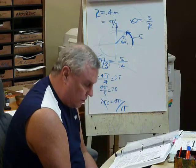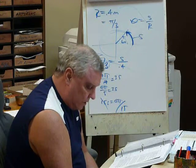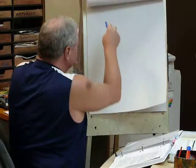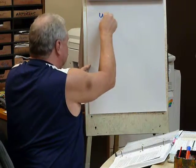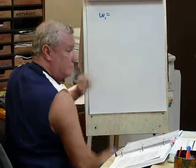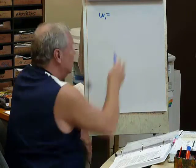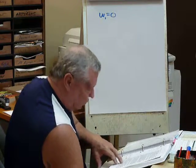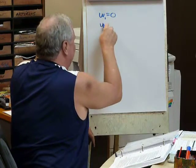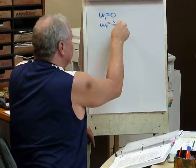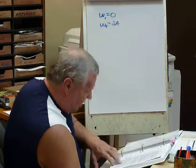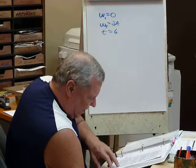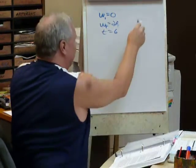Now, number 14, it says a wheel starts at rest, and there's a constant angular acceleration. So, let's go back and do it like that. Initial velocity, WI, is what? Zero. And it has a constant angular acceleration. If it reaches an angular velocity of 24, so WF equals 24, T equals six seconds. Find the angular acceleration. So, we want to find the alpha.